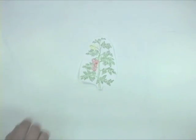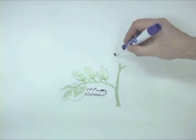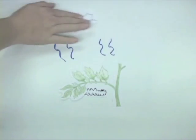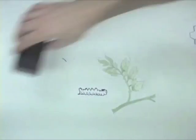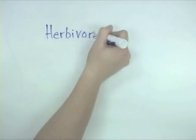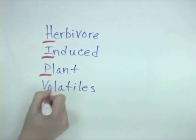To explain this, we don't need to go any farther than your own backyard garden. So let's take a look. Here is a tomato plant. This plant is being eaten by a tomato hornworm, a voracious herbivore. The tomato plant senses it is being eaten, and this damage causes the plant to produce and release a bouquet of volatile chemicals known as herbivore-induced plant volatiles, commonly referred to as HIPVs.